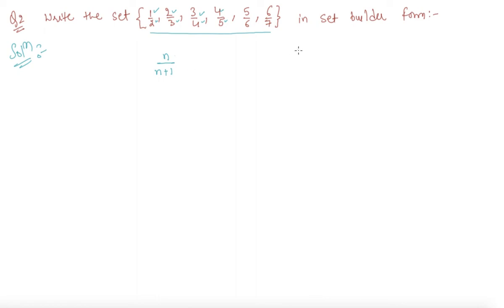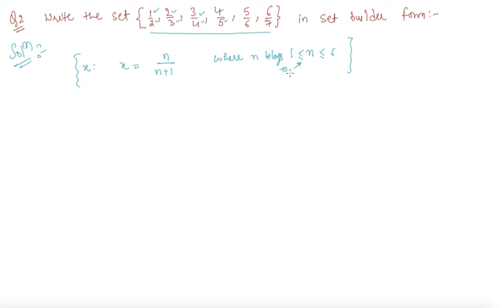So the set in set-builder form is written as {n/(n+1) : n ∈ ℕ, n ≥ 1}. This is the set-builder form. I hope you are now clear about what roster form and set-builder form are.